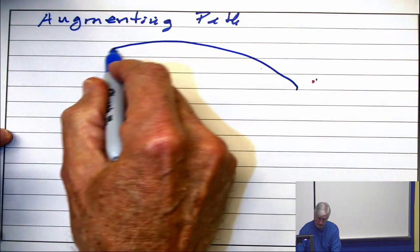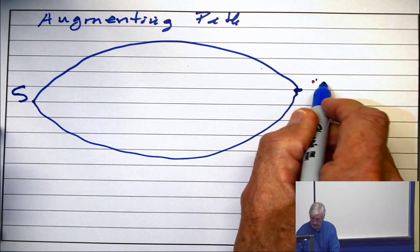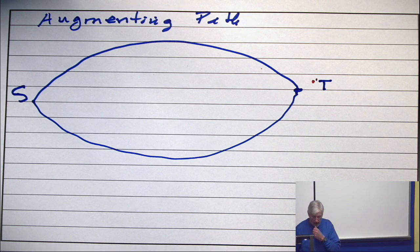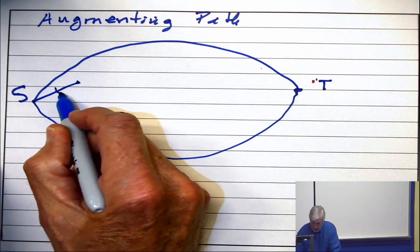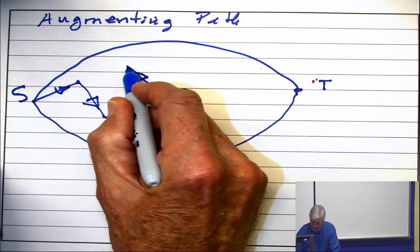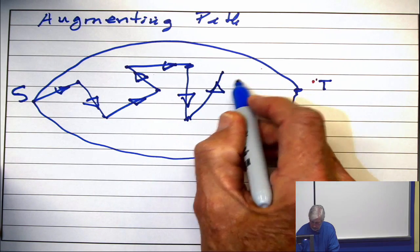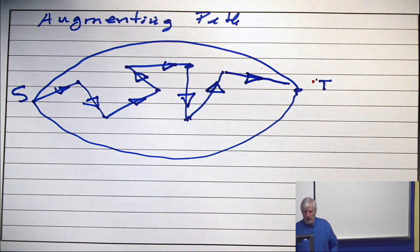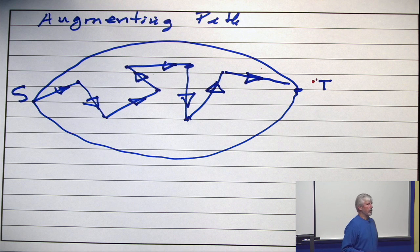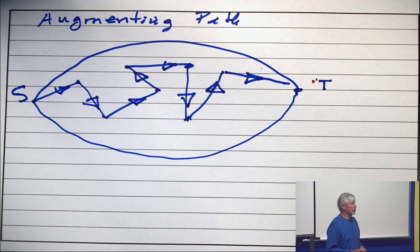So suppose you have a network. Here's your source, and here's your sink. And suppose I can find edges in here which look like this. Now that is a path in the directed graph sense that goes from the source to the sink. Every one of those edges has both a capacity, and currently it has a flow.